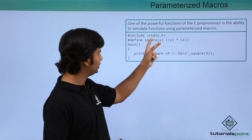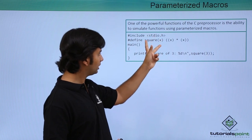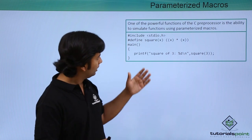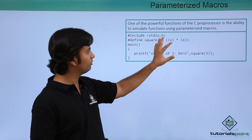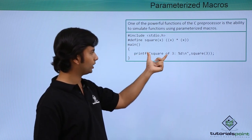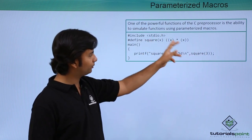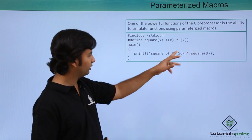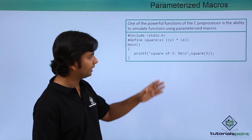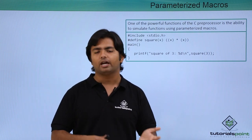For parameterized macros, you can see `#define square(x)` where `x` inside the parenthesis is a parameter. In the definition we simply compute the square: `x * x`. So whenever you write `square(3)`, the macro expands, replacing `x` with `3`, resulting in `3 * 3`, which evaluates as an expression and prints `9`.